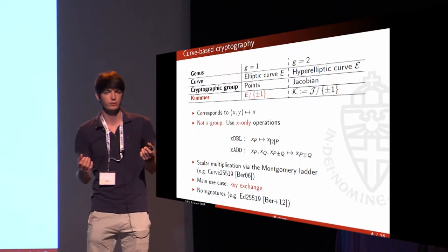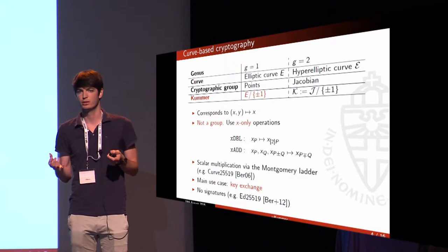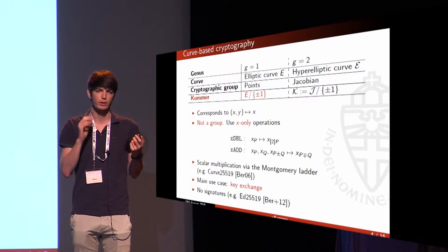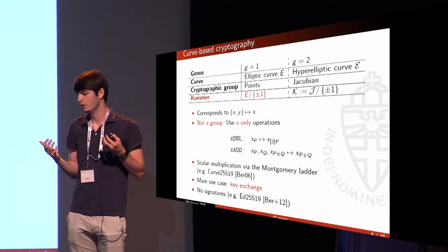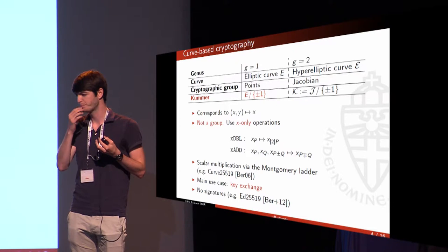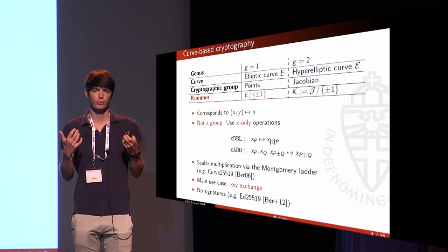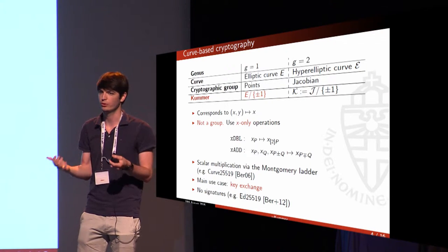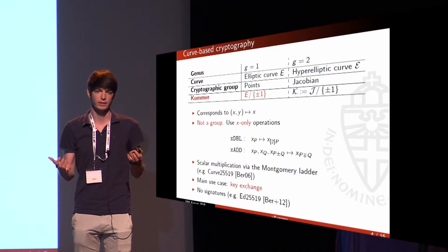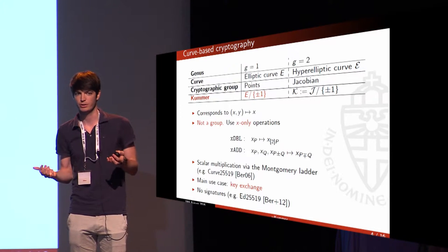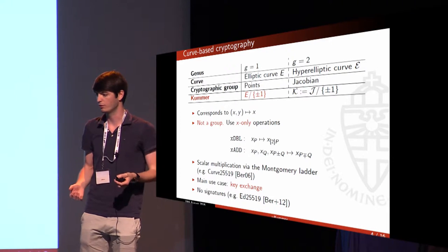That's what we need for Diffie-Hellman, so key exchange is still okay since we still have scalar multiplication. However, by losing the group structure, we lose generic additions and therefore lose the ability to do Schnorr-type signatures. For example, Curve25519 uses these X-only operations for very fast key exchange, but for Ed-DSA signatures they move to Ed25519, the twisted Edwards form, which is an equivalent curve.